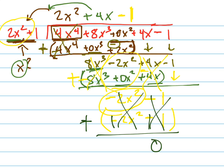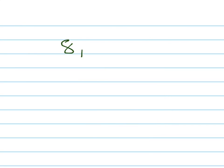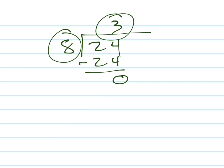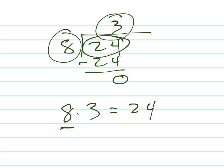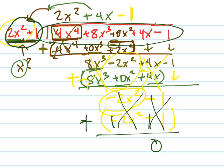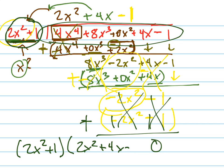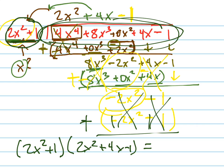What does it mean that I got 0 remainder? That means 2x squared plus 1 is a factor of the original polynomial. Let me explain: if I divided 8 into 24, it would go in 3 times with remainder 0 — that means 8 and 3 are both factors of 24. So 2x squared plus 1 and 2x squared plus 4x minus 1 are factors of that original quartic equation.